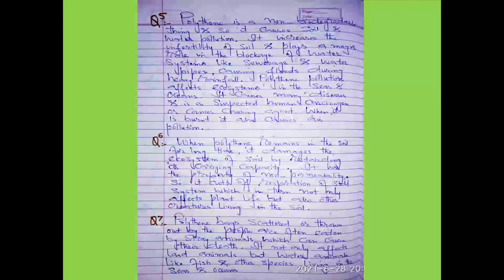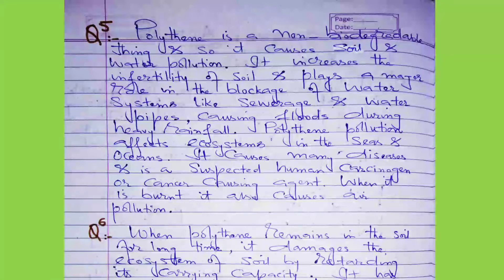Question number five: What are the harmful effects of polythene? Polythene is a non-biodegradable thing and so it causes soil and water pollution. It increases the infertility of soil and plays a major role in the blockage of water systems like sewerage and water pipes, causing floods during heavy rainfall. Polythene pollution affects ecosystems in the seas and oceans, causes many diseases, and is a suspected human carcinogen — a cancer-causing agent. When burnt, it also causes air pollution.